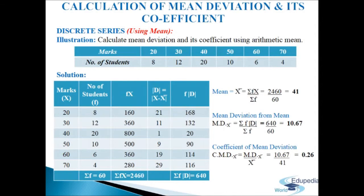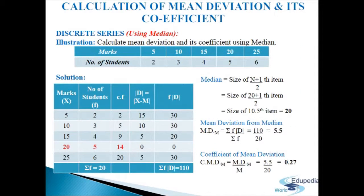Calculation of mean deviation and its coefficient in discrete series using median. We have to calculate mean deviation and its coefficient using median from the given data of marks and number of students. We will make a table of five columns: first column marks (x), second column number of students (f), third column cumulative frequency.